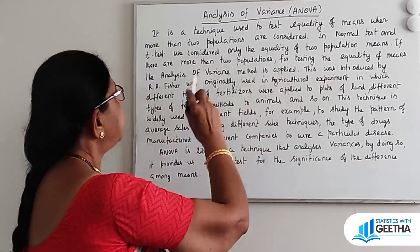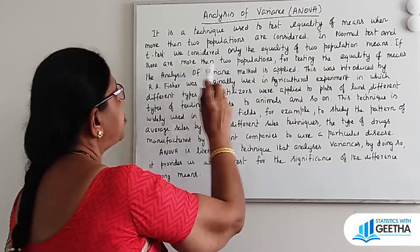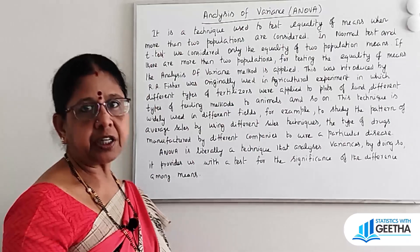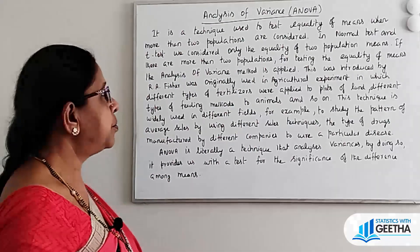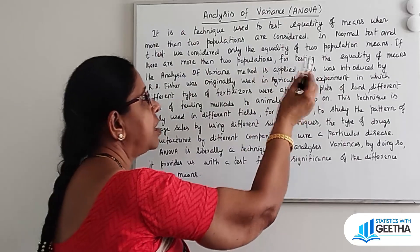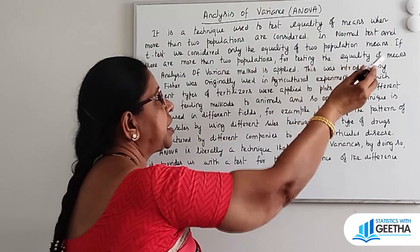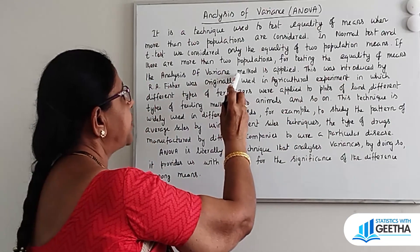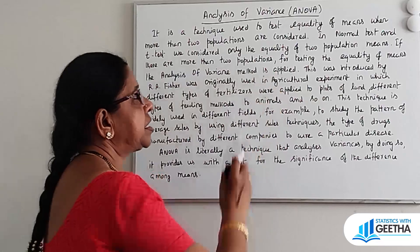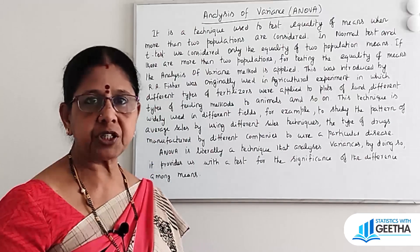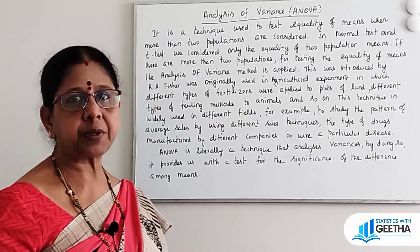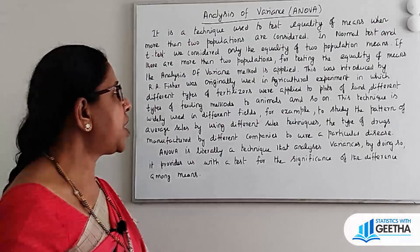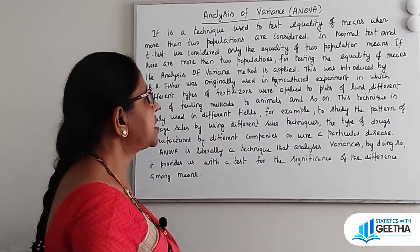Now, if there are more than two populations, for testing the equality of means, the Analysis of Variance method is applied. When there are more than two populations, we use the technique of ANOVA, that is Analysis of Variance.